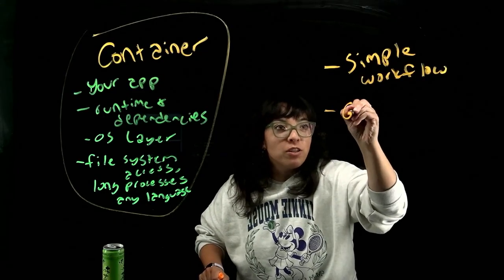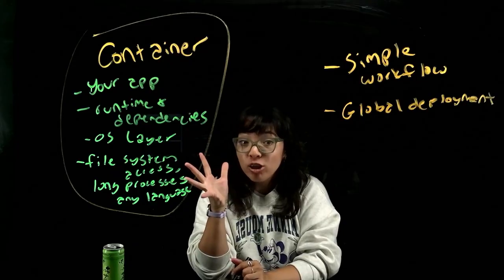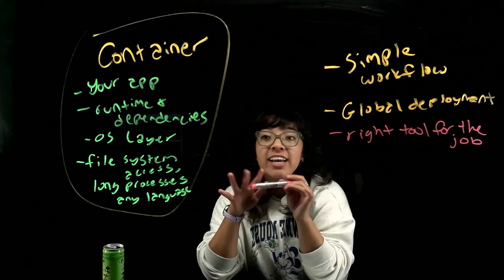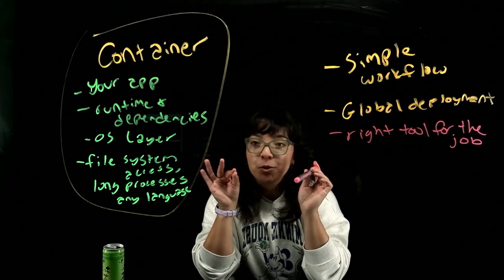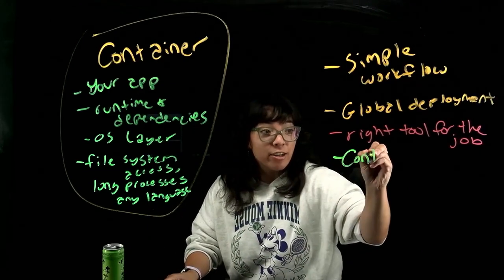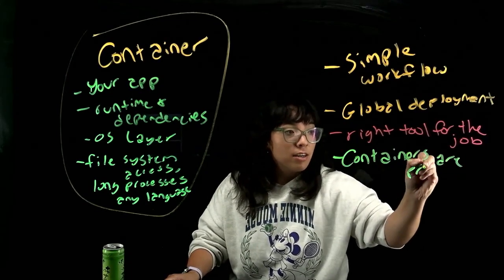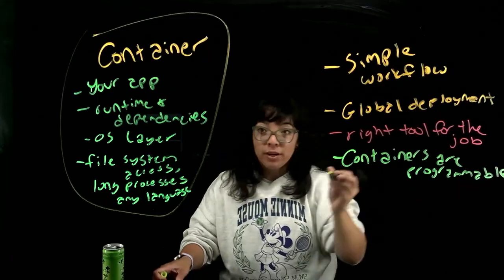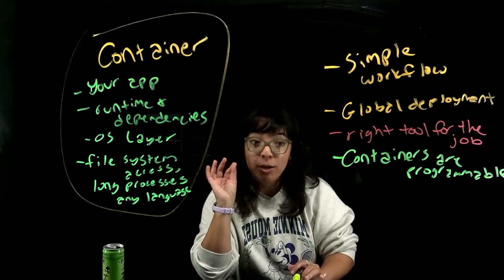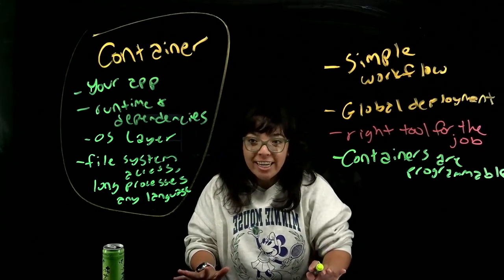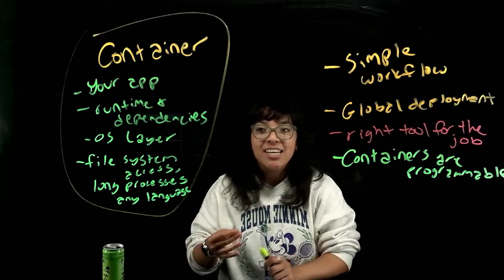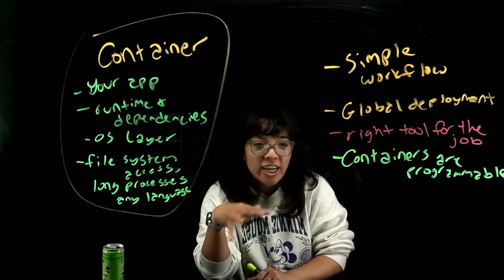Containers are global. As with Workers, you just deployed to region Earth — no need to manage configs across five different regions. Routing requests between Workers and containers is simple: use a Worker when you need to be ultra-lightweight and scalable, use a container when you need more power and flexibility. Containers are also programmable — container instances are spun up on demand and controlled by Worker code. If you need custom logic, just write some JavaScript instead of chaining together API calls or writing Kubernetes operators. It's like getting the power of Kubernetes with the simplicity of deploying a serverless function, but for any Docker container you already have.